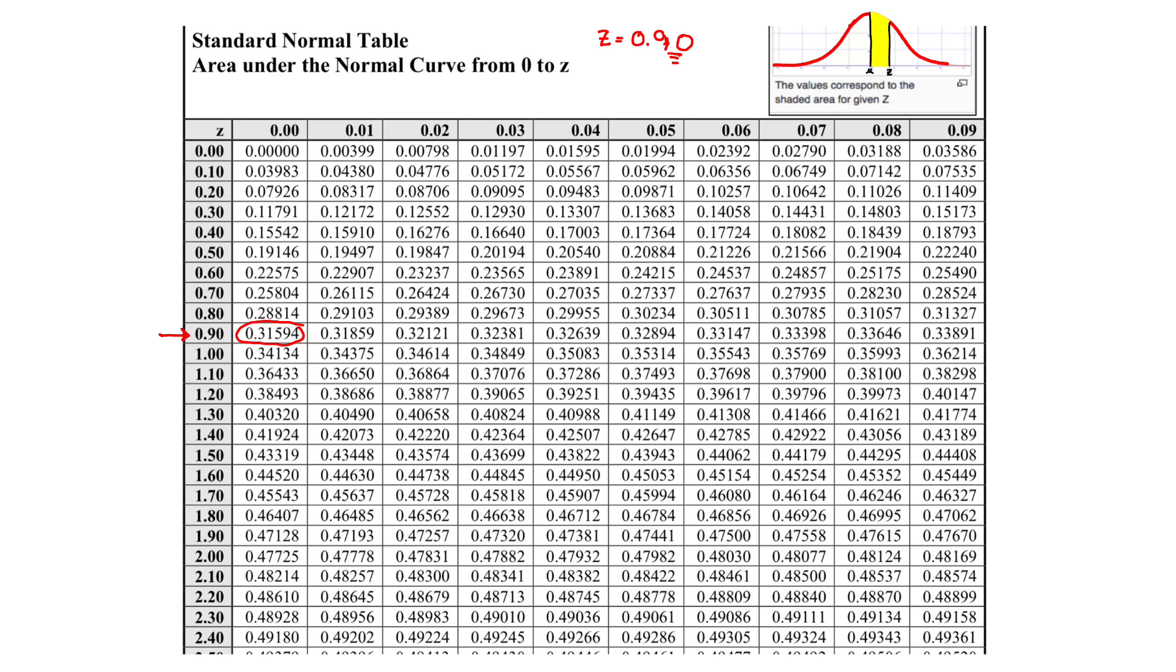So I'm going to look for my z-value being positive 0.7, and again, it's 0.70. So I'm going to go to my chart, and 0.7 falls right here. 0.70 is that first number. That first number is 0.25804.